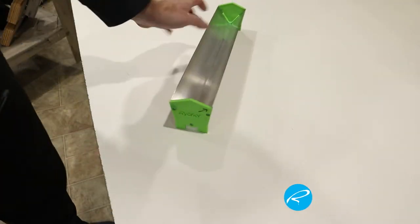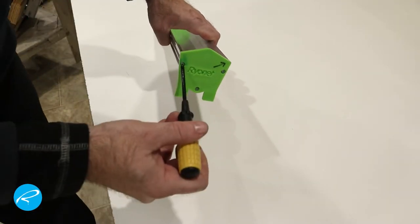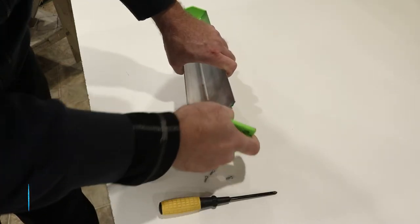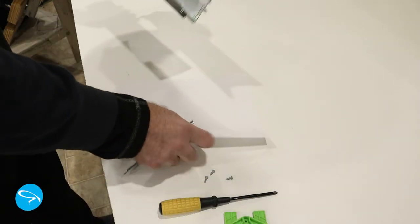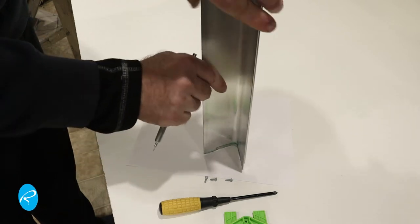I started by disassembling the scoop coater. This is a Ryanet one, yours may have a different profile, so this model may not work for all. Once it's apart, I trace the profile onto a sheet of paper.